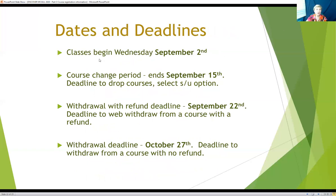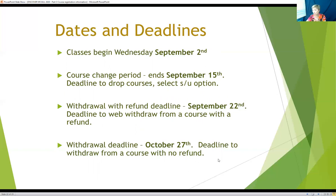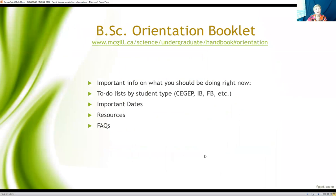Important dates: classes begin Wednesday, September 2nd. The course change period ends September 15th — that's also the SU option deadline, though freshmen cannot choose SU grading, only U1 students. The withdrawal with refund deadline is September 22nd, and the final withdrawal deadline with no refund is October 27th. Download the BSC orientation booklet from our website — it has all this information in one place. The undergraduate handbook covers your full four years, but the orientation booklet focuses on what you need to worry about this year.